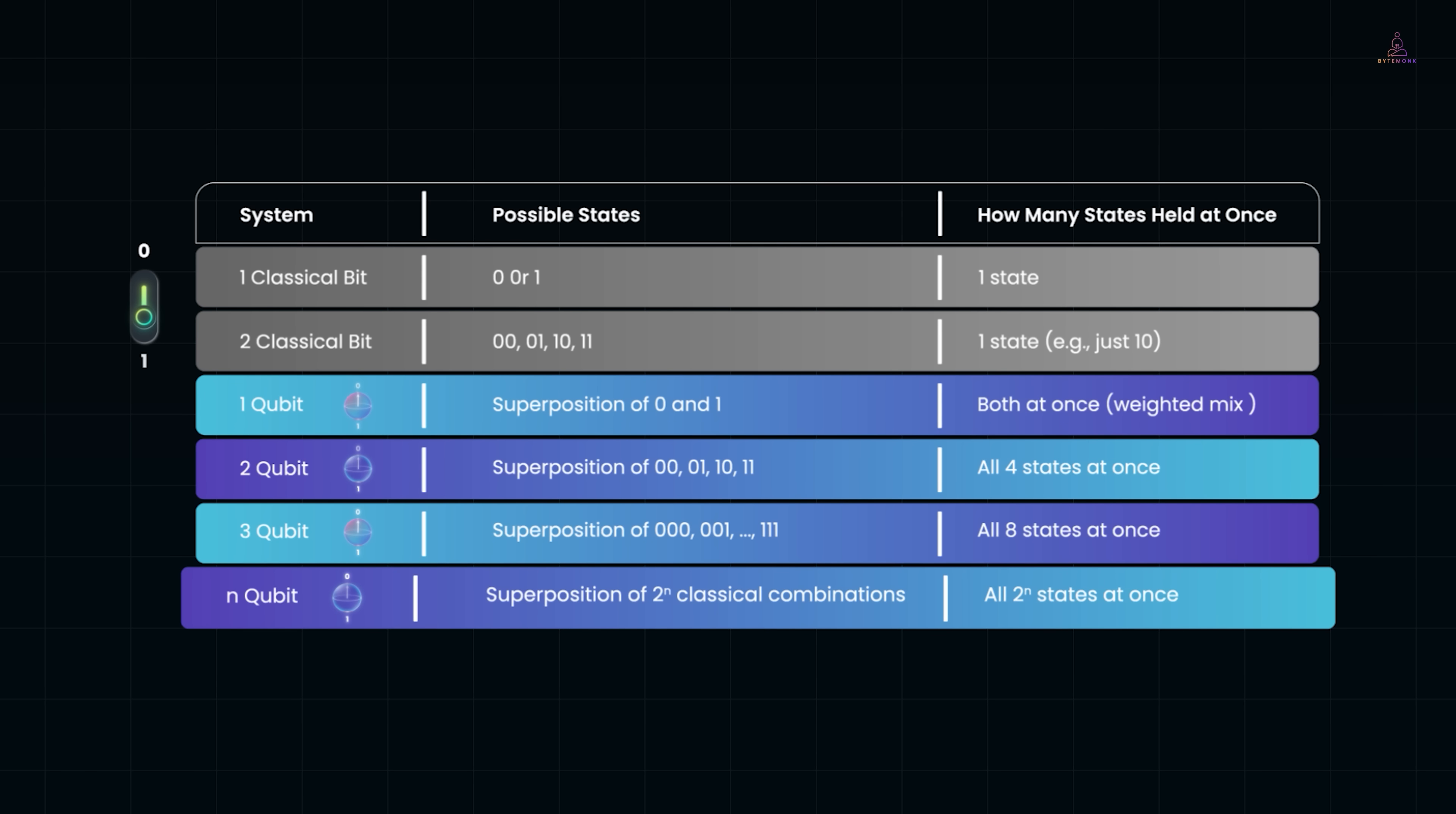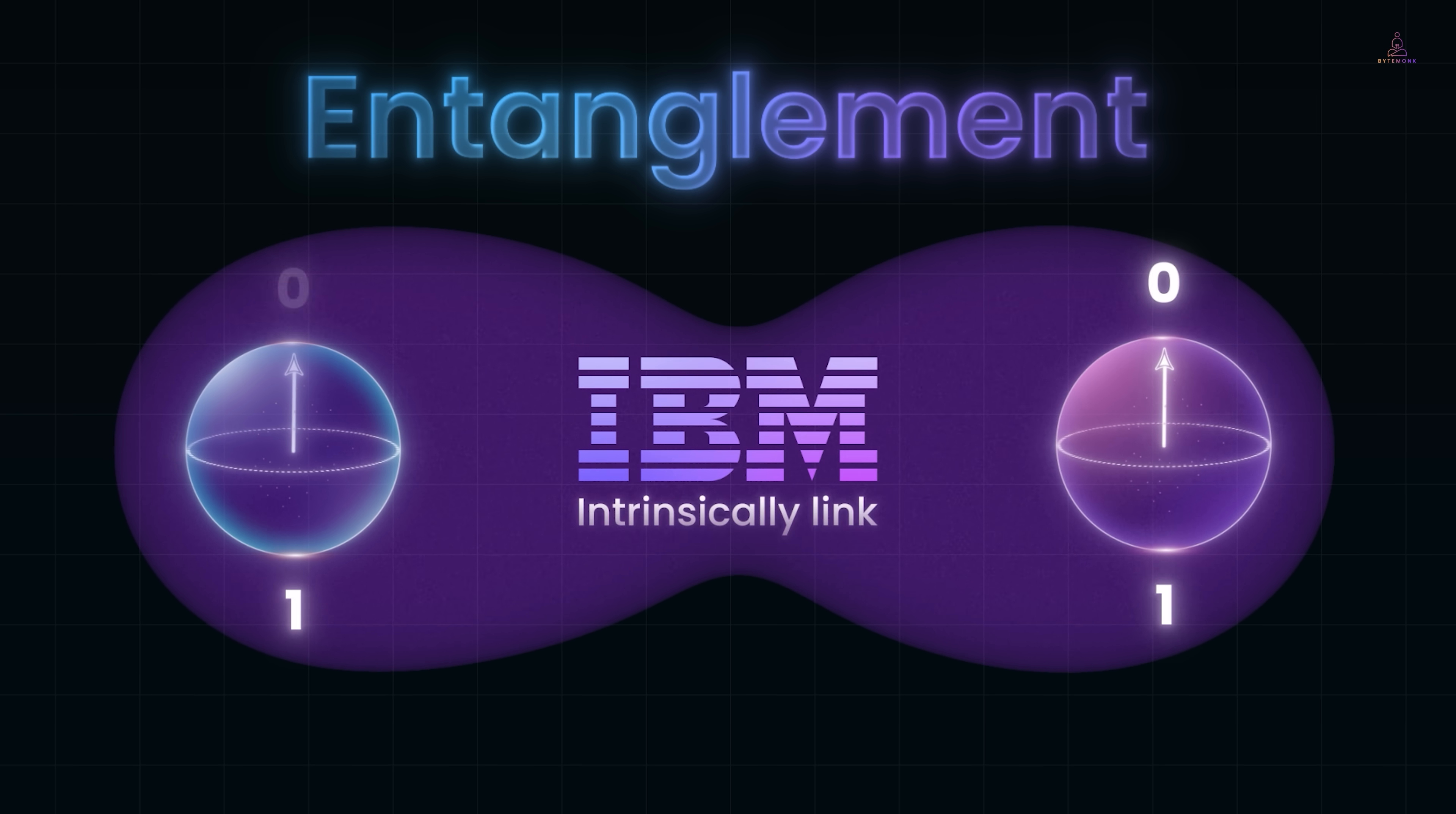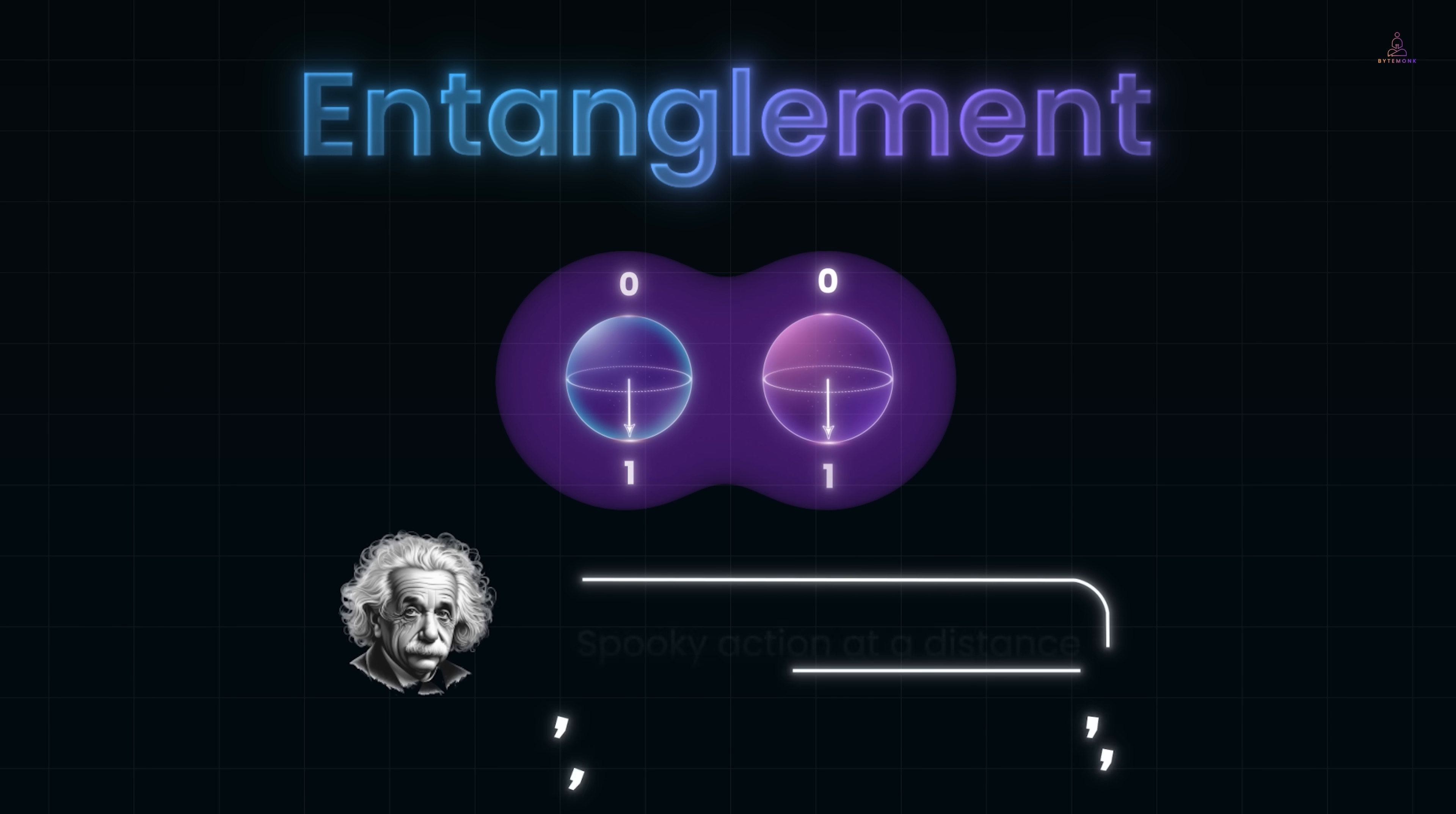So far we've focused on single qubits and how we can control their state. But the real magic begins when qubits start working together. Entanglement is a special correlation that can exist between qubits. When two qubits are entangled, their states become linked such that if you observe one, you instantly know something about the other, even if they're separated by large distances. As IBM puts it, entanglement is the ability of qubits to intrinsically link with each other. Measuring one immediately influences the state of its partner. And this isn't due to any signal passing between them. It's just how nature works at the quantum level. Albert Einstein famously called it spooky action at a distance, and it's a fundamental resource for quantum computing.